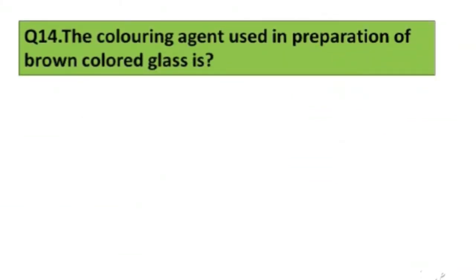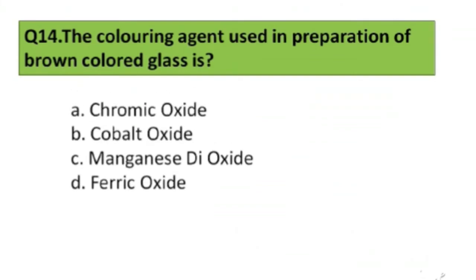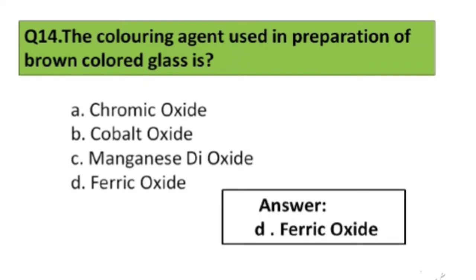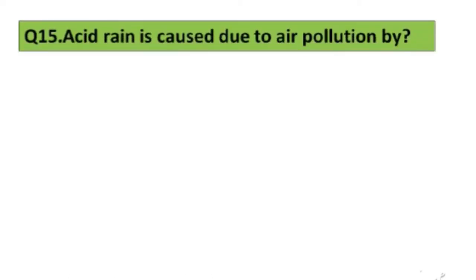Question number 14. The coloring agent used in preparation of brown colored glasses: A. Chromic oxide, B. Cobalt oxide, C. Manganese dioxide, D. Ferric oxide. The right answer is option D, Ferric oxide.